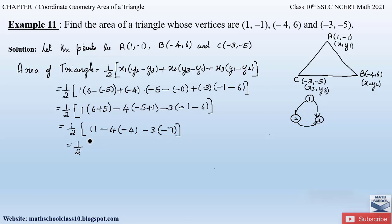Half into 11, minus into minus will become plus, and 4 into 4 will become 16. Again minus into minus will become plus, 3 into 7 will be 21. So first let us add the bracket terms. So what is 11 + 16 + 21? 11, 16, and 21.